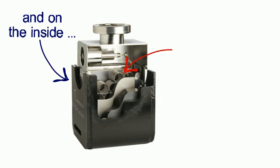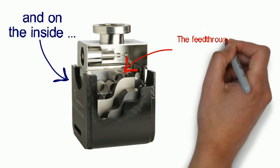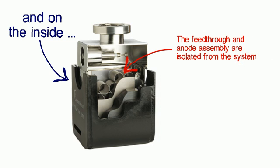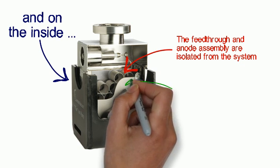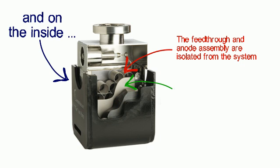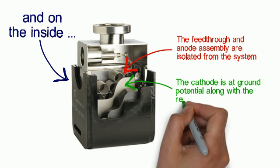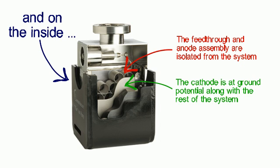We start with a feed-through and an anode assembly made out of stainless steel anode tubes. Those are isolated from the rest of the system, electrically isolated that is. Pointing to the green there are cathodes that are at ground potential along with the rest of the system.